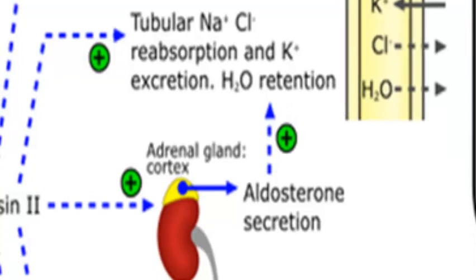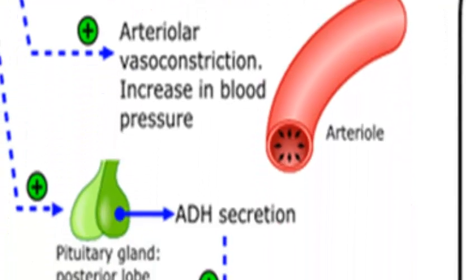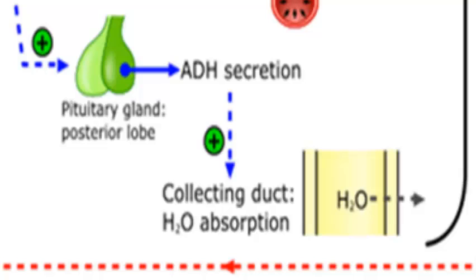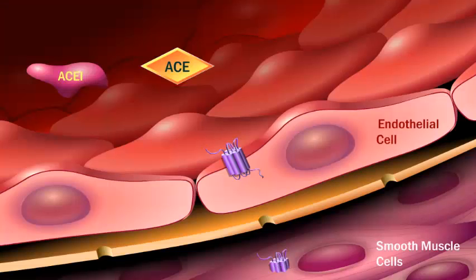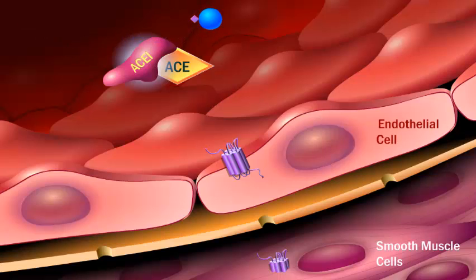This increases blood volume and raises blood pressure. This also occurs via the secretion of aldosterone from the adrenal glands. Blood vessels are constricted, resulting in an increase in peripheral resistance. And finally, antidiuretic hormone is released, which reabsorbs more water from the collecting ducts, so blood volume increases. ACE inhibitors were created to block these effects by competitively binding to the enzyme ACE, resulting in an overall drop in blood pressure.